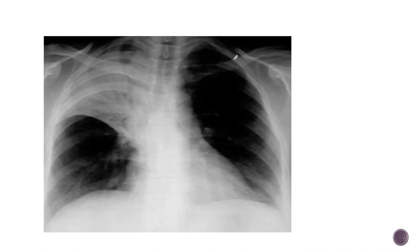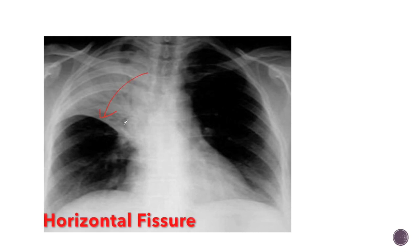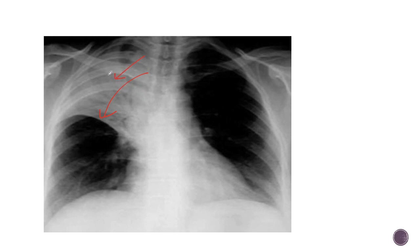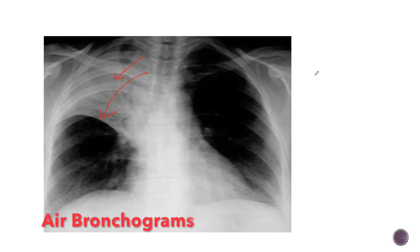In this chest X-ray, there is opacity in the right upper zone. This opacity has a sharp lower margin, which represents the horizontal fissure in its normal position. We can also see multiple lucencies in the opacity in the right lung — these lucencies represent patent bronchi, also known as air bronchograms.